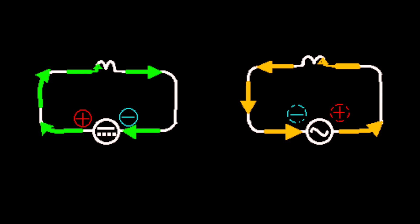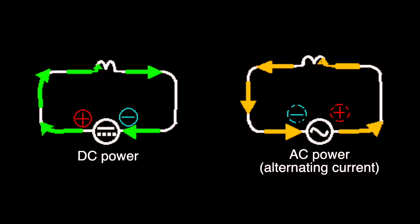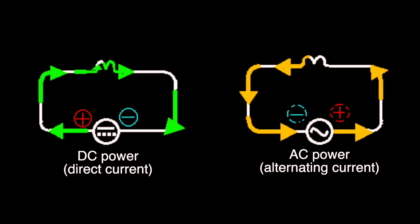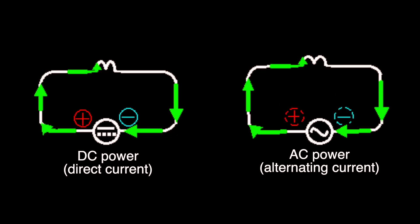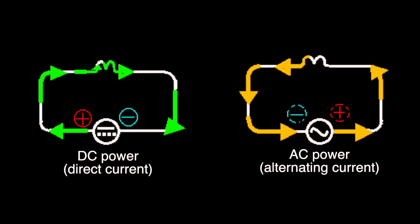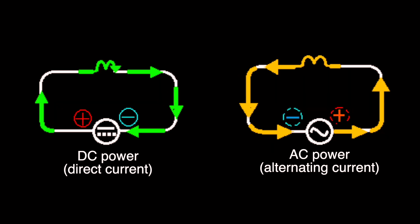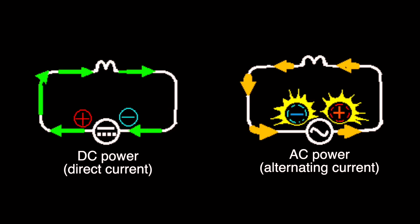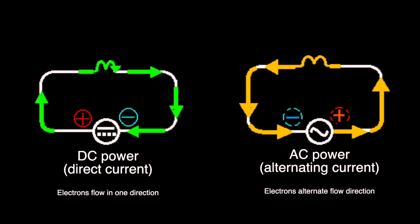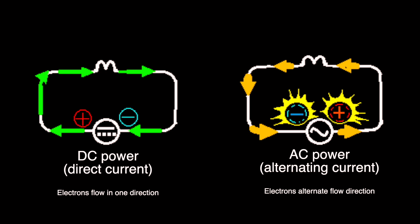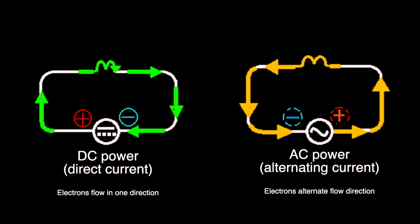Well, what does that even mean? Basically there are two types of current: AC and DC. AC stands for alternating current and DC stands for direct current. The way electricity works is there are electrons flowing through the circuit, and in alternating current the electrons alternate which direction they're going — back and forth really, really quickly. There's no one direction to the circuit; it goes both ways really quickly. The benefit of this is it allows electricity to travel really long distances. Basically what the power supply does is convert the AC voltage from the wall into DC voltage for the LED.